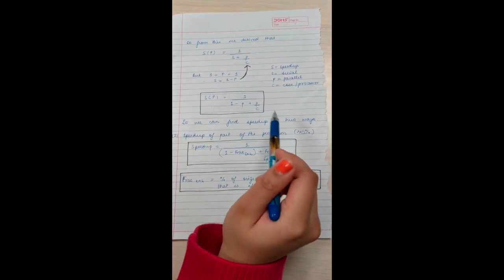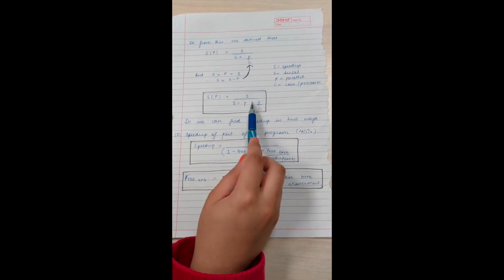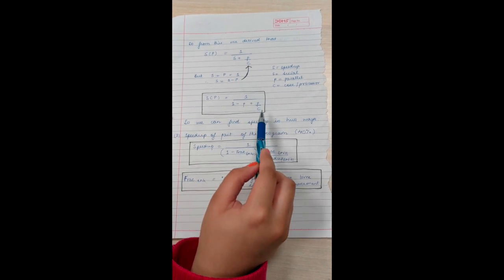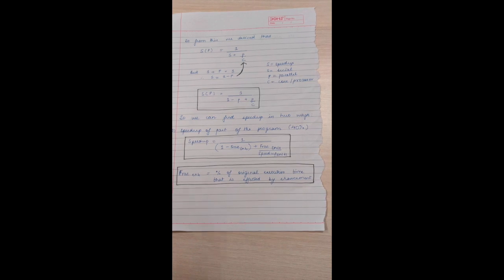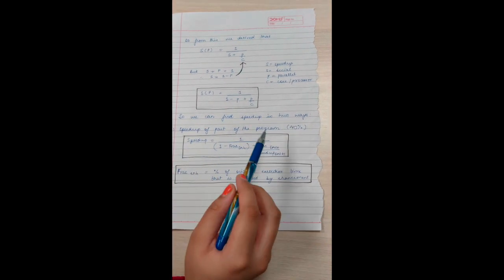Our basic formula comes out to be speed up equals 1 divided by ((1 - P) + P/C). So now we can find speed up in two ways. One is when we have to find the speed up of part of the program.